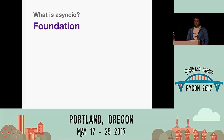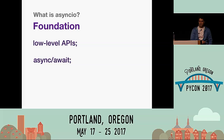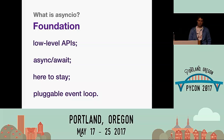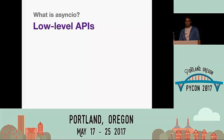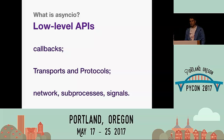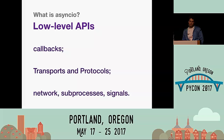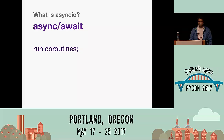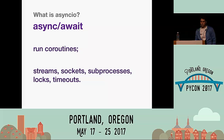Let's talk about asyncio. Asyncio is, first of all, a foundation. It defines low-level APIs and high-level async/await APIs. It is here to stay, and it has a pluggable event loop. The low-level APIs include scheduling callbacks, writing protocols with transports, doing network, subprocesses, and handling Unix signals — all callback-based and very low-level. But this allows us to integrate with other low-level code written in C, C++, and others. On top of that, it has async/await to run coroutines, streams and sockets, network programming, subprocesses, locks, timeouts, and cancellations.